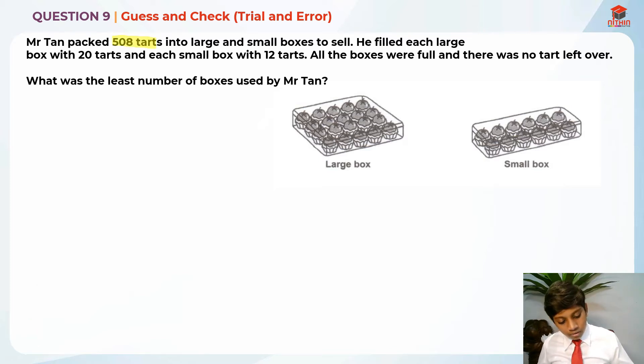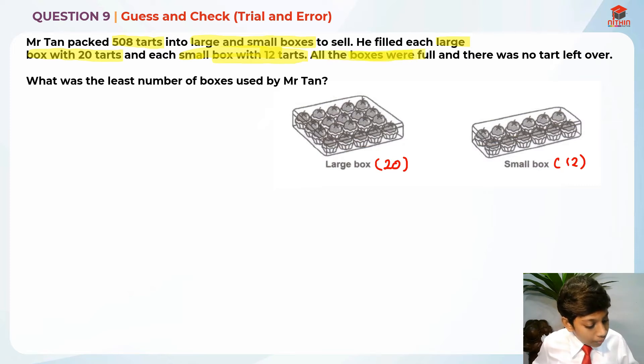Mr Tan packed 508 tarts into large and small boxes. He filled each large box with 20 tarts and each small box with 12 tarts. So this is what they mean. Large box is 20 and small box is 12. I'm just going to write that down there. And they're telling us that all the boxes were full and there was no tarts left over. They're asking us the least number of boxes used by Mr Tan.